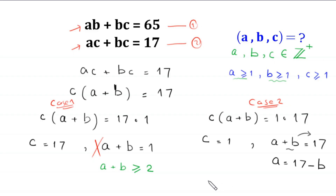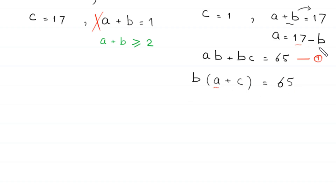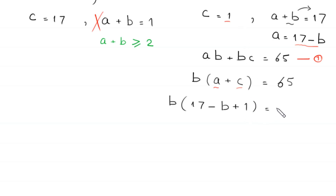Equation 1 is A times B plus B times C is equal to 65. From these two terms AB plus BC, we can factor out B, giving B times (A plus C) is equal to 65. In this equation, we replace A with 17 minus B and replace C with 1, giving B times (17 minus B plus 1) is equal to 65.